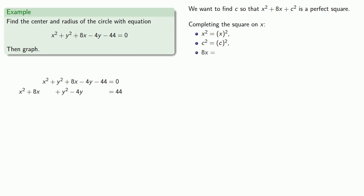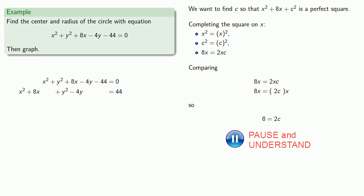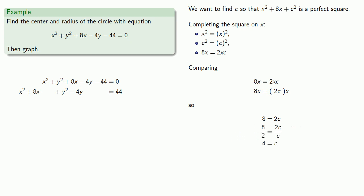We want the middle term, 8x, to be 2 times the square roots x and c. Comparing, 8x is supposed to equal 2xc. Rearranging, 8 times x must be the same as 2c times x, so 8 must equal 2c. Solving for c, we find that c must equal 4.